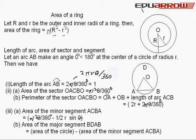Area of the sector OACBO is equal to πr²θ upon 360 degrees. Perimeter of the sector OACBO is equal to OA plus OB plus length of arc ACB.